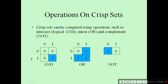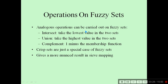Operations that may be performed on crisp sets: crisp sets can be compared using operations such as logical AND, OR, and complement — this is AND, this is OR, this is NOT. Analogous operations can be carried out on fuzzy sets, like intersect, union, and complement. For intersection, we take the lowest value in the two sets; for union, we take the highest value; and for complement, we subtract from one. Crisp sets are just a special case of fuzzy sets, giving more enhanced results in mapping.